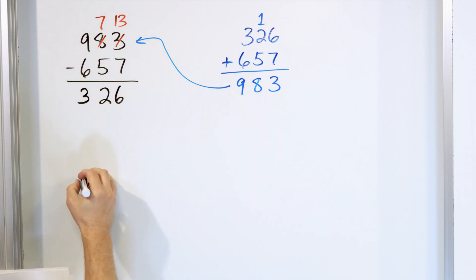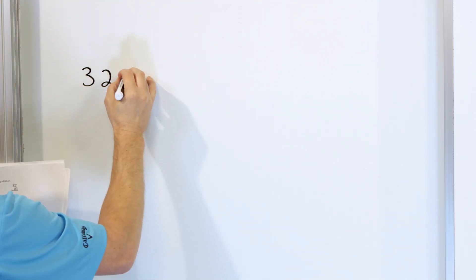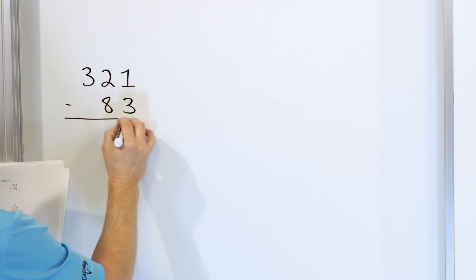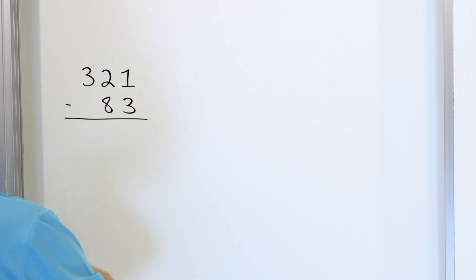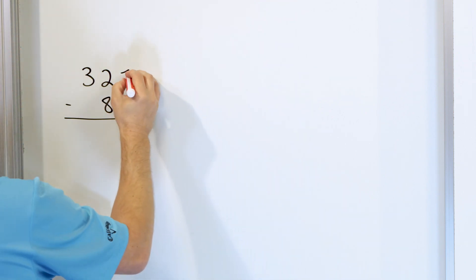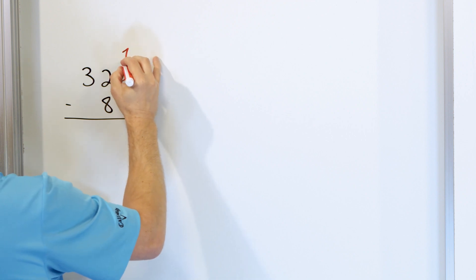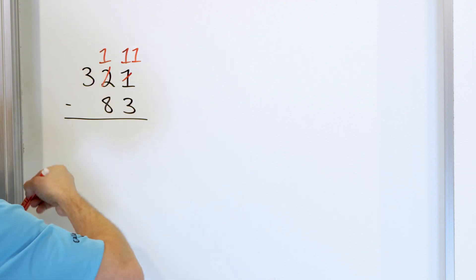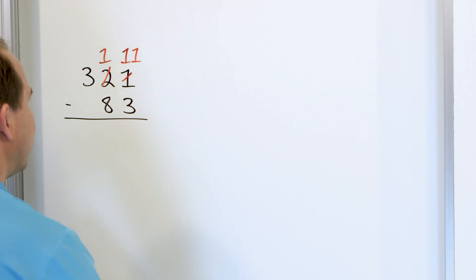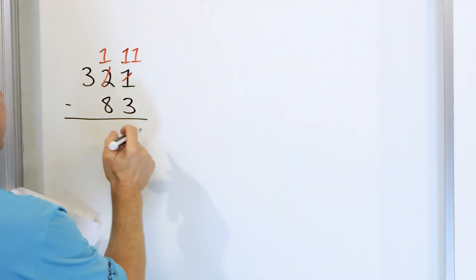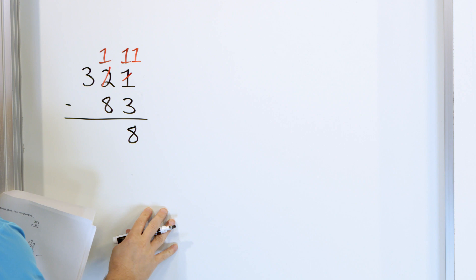The next problem: 321 and we need to subtract from that 83. What is 1 minus 3? We can't do that because 1 is not big enough, so the 1 has to become an 11. We borrow from the 2 and make it a 1. So now what is 11 minus 3? We start with 11 and go down: 10, 9, 8. We land on 8, so an 8 goes right here.